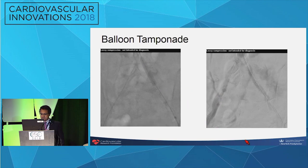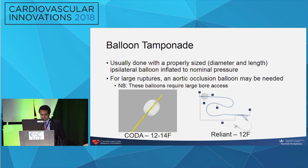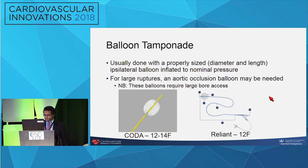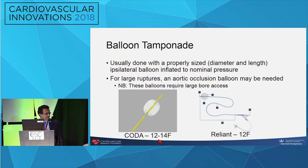In this case, after about ten minutes of balloon tamponade, we were not able to seal the perforation. The next step is a covered stent. But before that, in addition to balloon tamponade of the ipsilateral limb, it's important to know your options for aortic occlusion, particularly if you're getting into trouble and think you'll need to go to the OR. There are two large balloons commonly used in the US, the CODA balloon and the Reliant balloon, both used primarily for endografts. These are large-bore access devices, so you'll need contralateral access that will accommodate a large-bore device, which is not always simple in these patients.